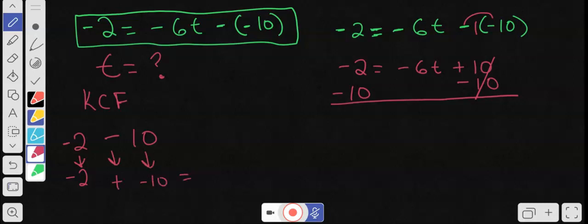So that will make it negative 2 plus negative 10 is negative 12. Negative 12 is equal to negative 6t. That's how keep-change-flip works. It works when you're subtracting, when you see a subtraction sign between two integers that have different signs, you apply the keep-change-flip rule.